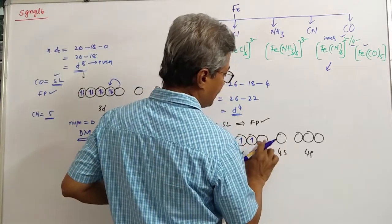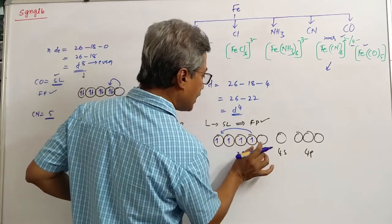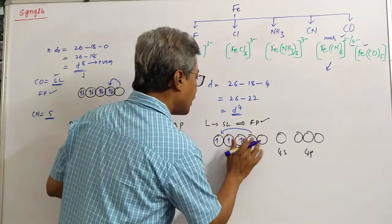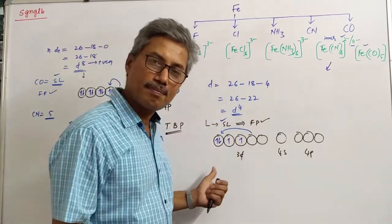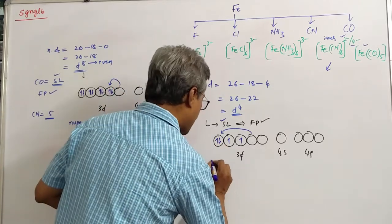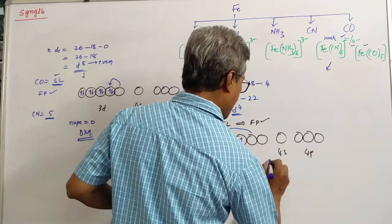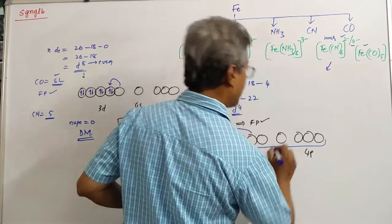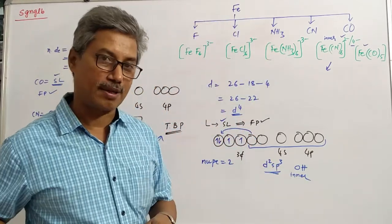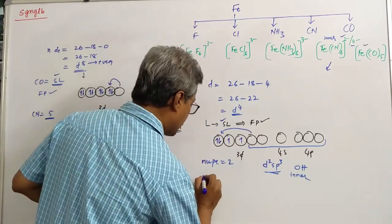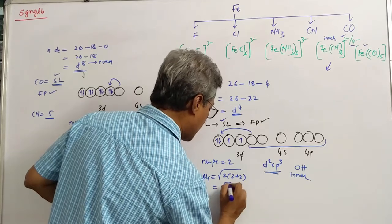Since the strong ligand is present, one electron is shifted and paired, making a 6th orbital available. The hybridization is D2SP3, which is octahedral and inner, because inner D orbitals are utilized. The number of unpaired electrons remaining is 2. The spin-only magnetic moment = √(n(n+2)) = √(2×4) = √8 Bohr magnetons.